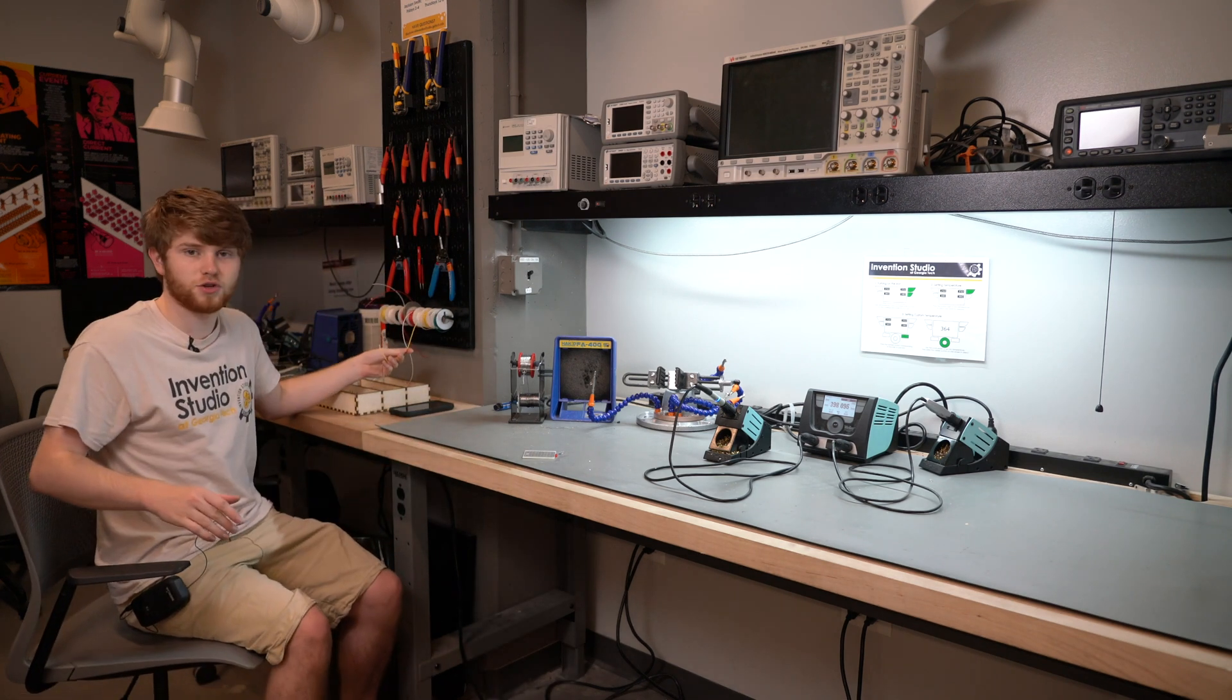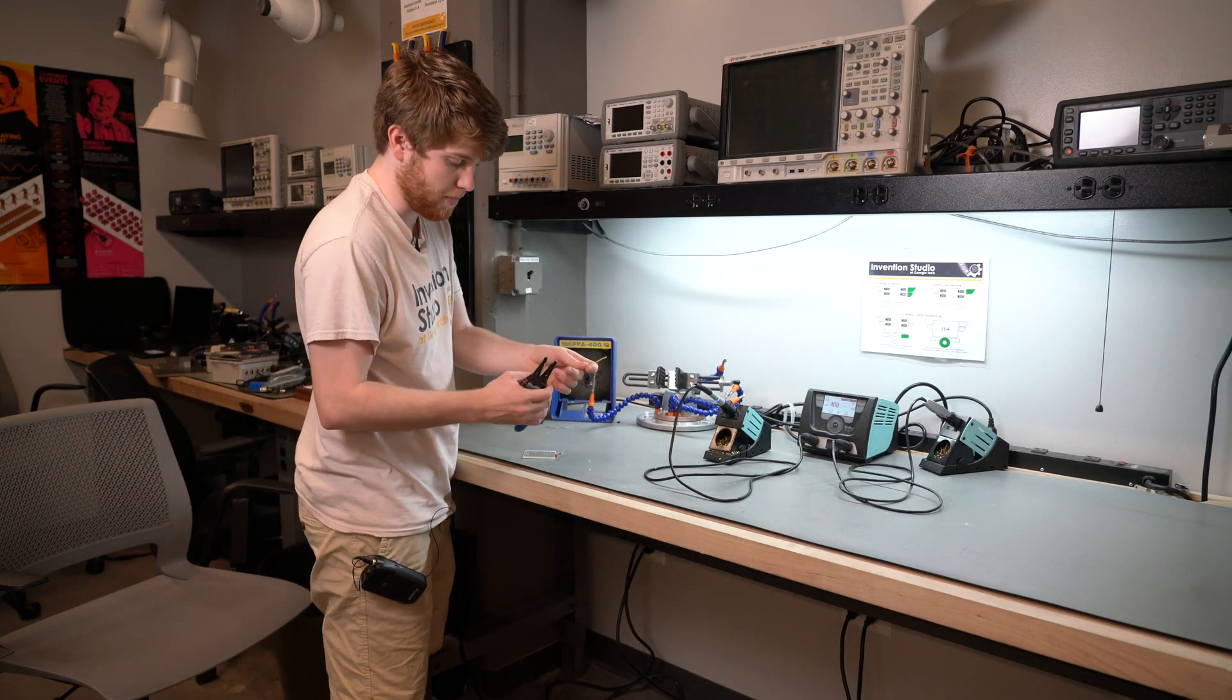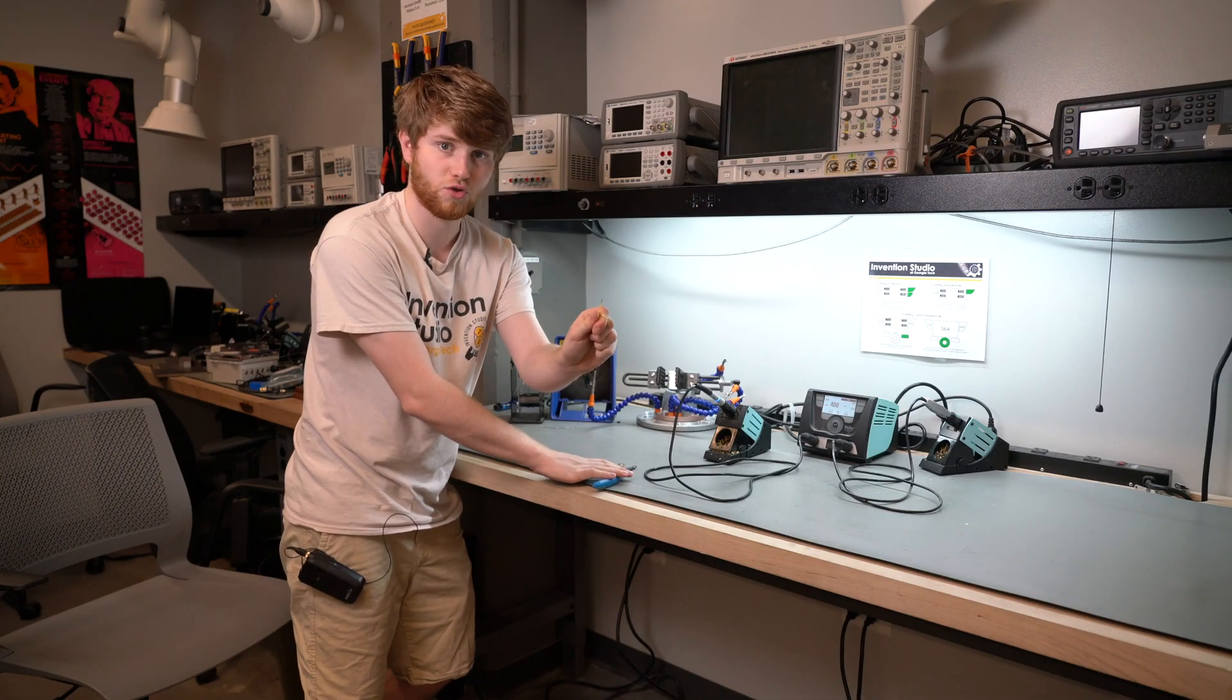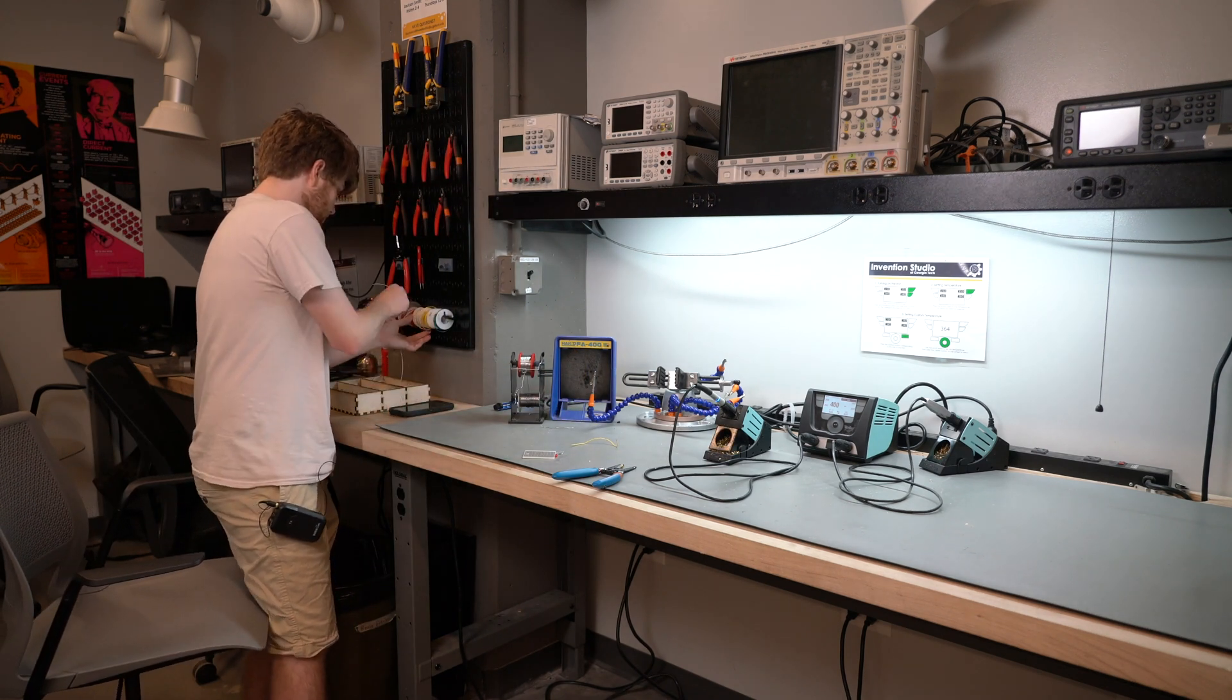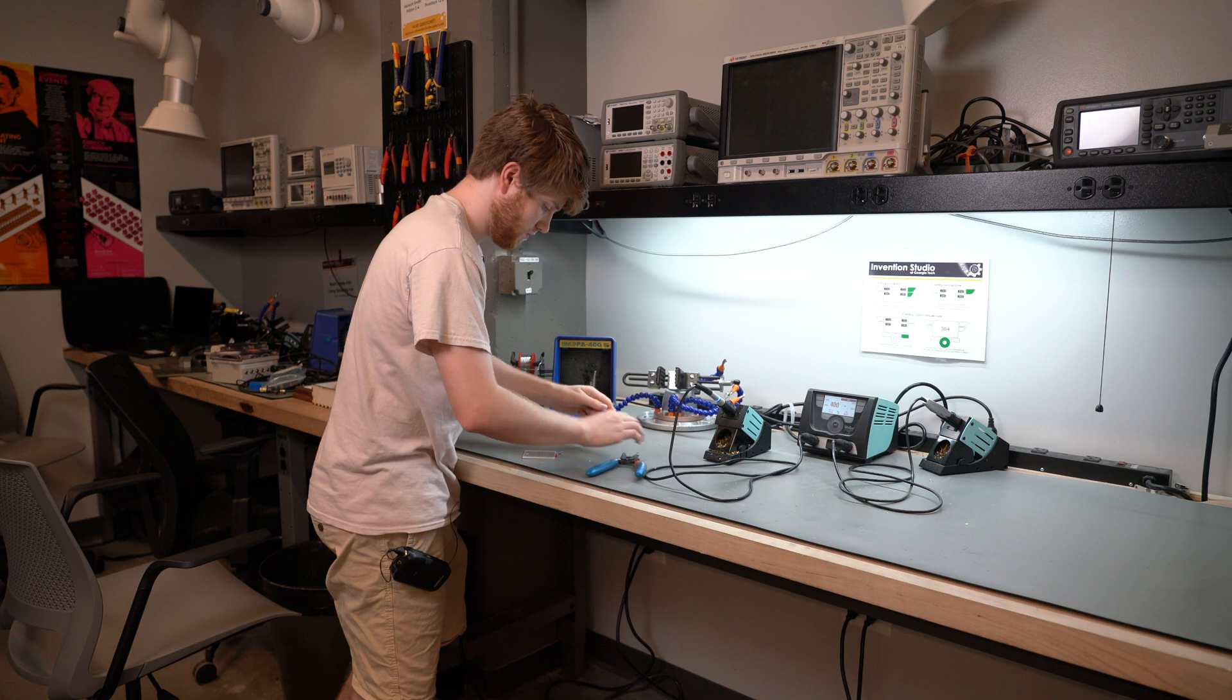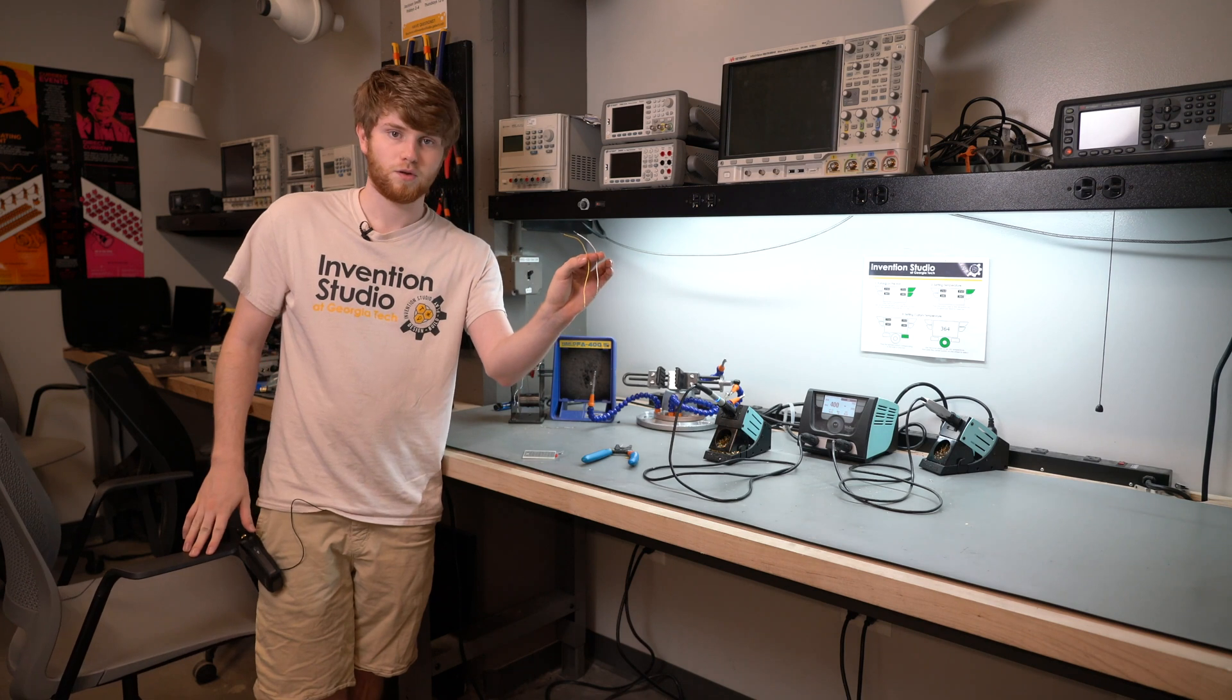Your next step is going to be to get some wire from the wire rack in the center. Using the wire strippers, you can cut it and strip the wire. Both ends of the wire need to be stripped. This is 22 gauge wire, so it goes in the 22 gauge slot. You can pull it off and strip the ends. You'll do this two times for two pieces of wire. Awesome. Two wires, both ends stripped.